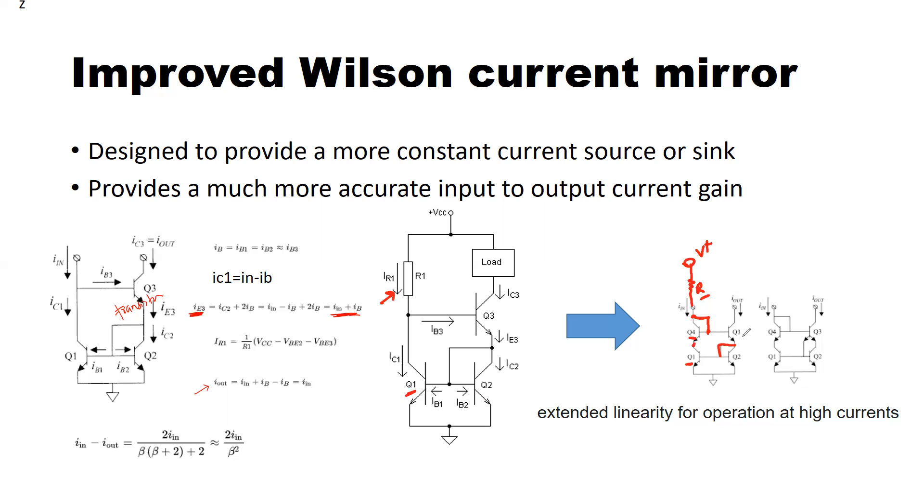So here is how this current mirror advantage. Again, it has extended linearity for the operation at high currents. As I just mentioned, if you want to design a current mirror in the milliampere range, you can use this cascode arrangement with the four-transistor Wilson current mirror. This will reduce the gain error also to a negligible level and to a great level matching the input and output current, or making the difference between input and output current to a negligible level.